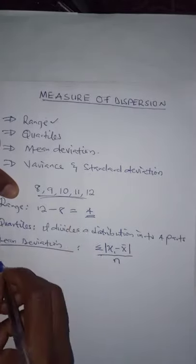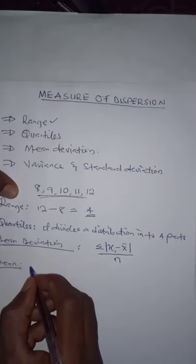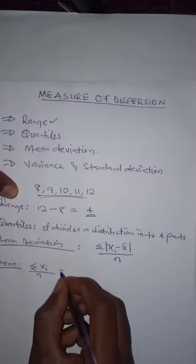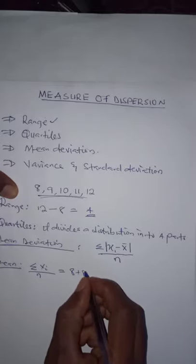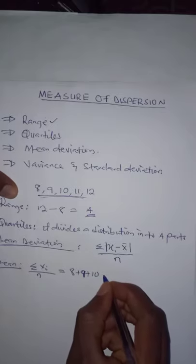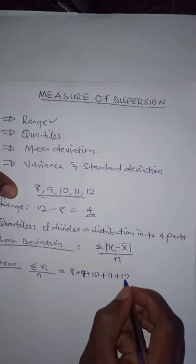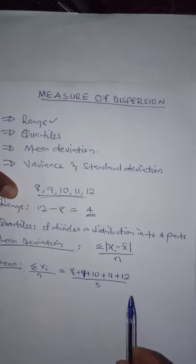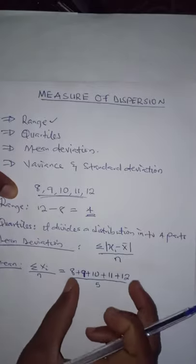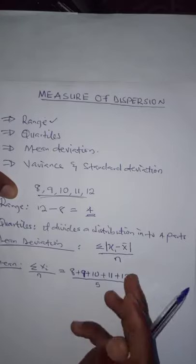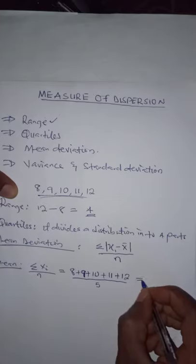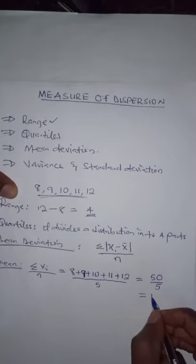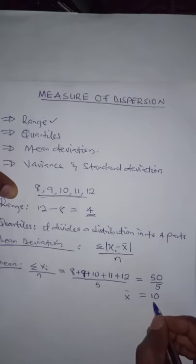We are going to first find the mean of this data. The mean is the sum of all the data divided by the number of data. This will be equal to 8 plus 9 plus 10 plus 11 plus 12, divided by 5. 12 plus 8 is 20, and 9 plus 11 is also 20; 20 plus 20 is 40, plus 10 is 50. So this equals 50 divided by 5, which is 10. The mean X-bar is equal to 10.